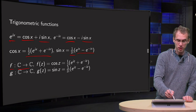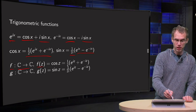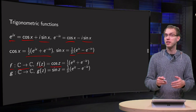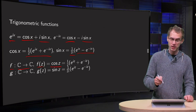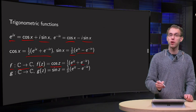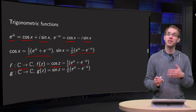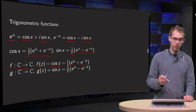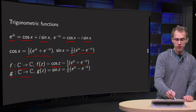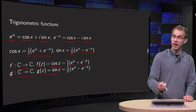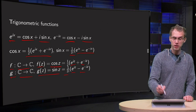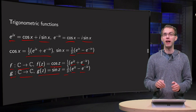For cosine, we define f from ℂ to ℂ, where cosine of z equals one-half times e to the power iz plus e to the power minus iz — just replace all x by z. And similarly for the sine, g from ℂ to ℂ, where g of z equals sine of z equals 1 over 2i times e to the power iz minus e to the power minus iz.